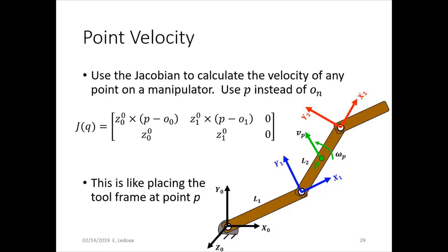If you write those equations to any point, you can use the basic or the formula method to get the Jacobian. And then you can find the velocity of that point. It's like placing the tool frame at the point P.